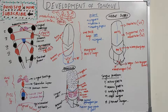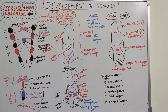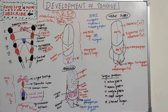The posterior one-third is supplied by the glossopharyngeal nerve, whereas the anterior two-thirds is supplied by the trigeminal nerve. The muscles of the tongue have a different origin — they arise from occipital somites which have migrated forward into the tongue area, carrying with them their nerve supply, which is the hypoglossal nerve. So the hypoglossal nerve supplies the musculature of the tongue.